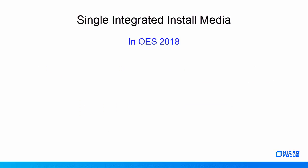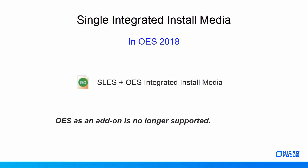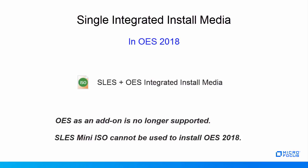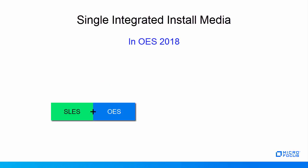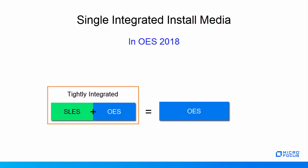Moving on to OES 2018, only one integrated install media is available. OES as an add-on is no longer supported, and therefore SLES mini ISO cannot be used to install OES 2018. SLES and OES are tightly integrated into a single install media, which simplifies the OES installation. The single install media contains only OES product information.